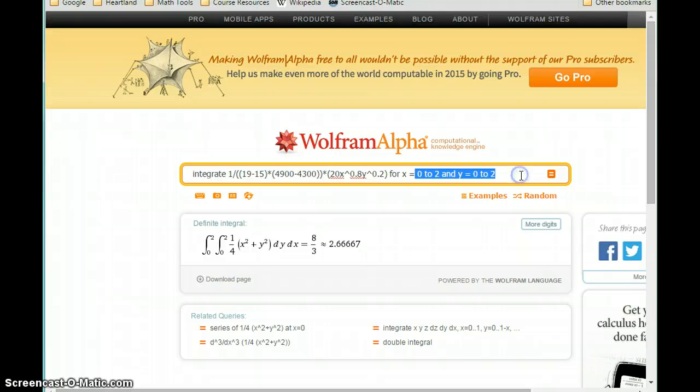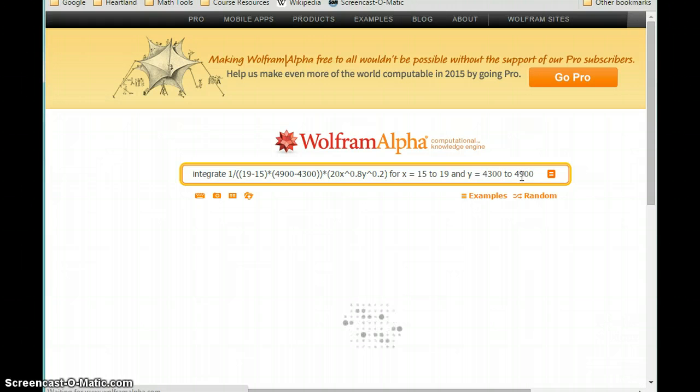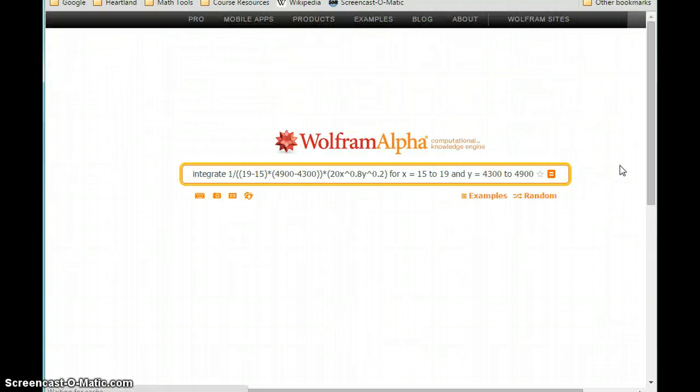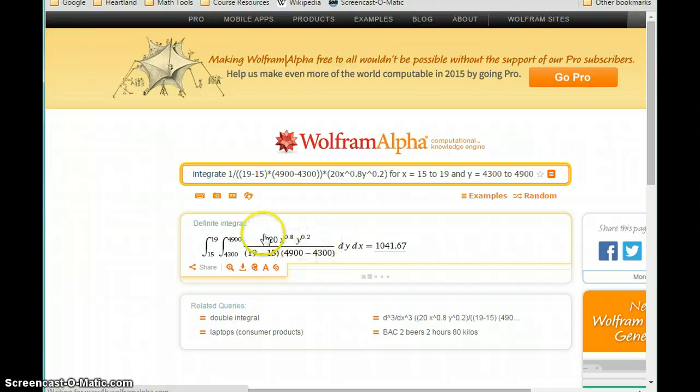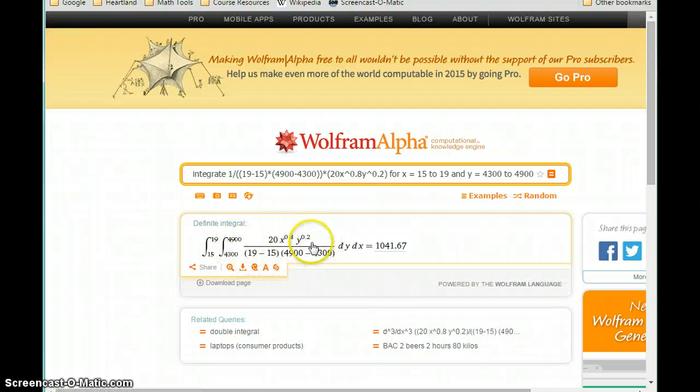We evaluate that for x equals 15 to 19, and y equals 4,300 to 4,900. This is important to check and ensure the statement makes sense, especially with all those parentheses. We could take 19 minus 15, 4,900 minus 4,300, since that's just a constant multiple, and pull it out in front of the integral expression to see it matches what we wrote before.